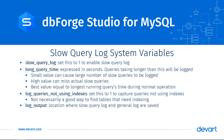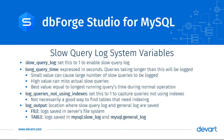Lastly, we have log_output. This variable dictates the output location of the slow query log and the general log, and can have three values. When set to file, the logs are saved in the server's file system. When set to table, the slow query log is saved in the MySQL database's slow_log table and the general log in the general_log table. If set to none, it will turn off logging.